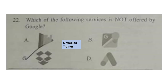Question 22: Which of the following services is not offered by Google? The correct answer is option C. Option A is Play Books, B is Google Maps, and D is AdWords — all of these are offered by Google. Option C is not offered by Google, so the answer is option C.